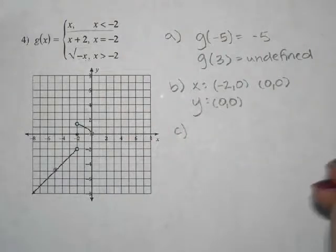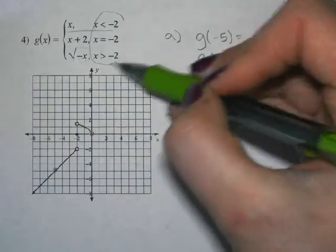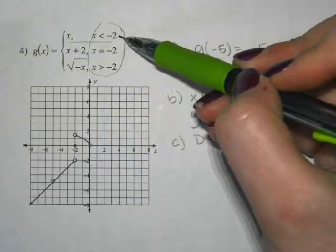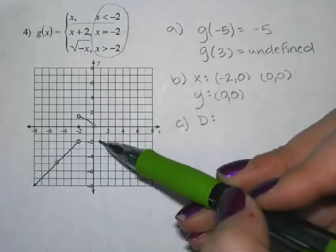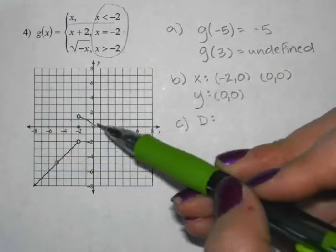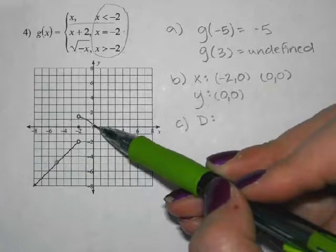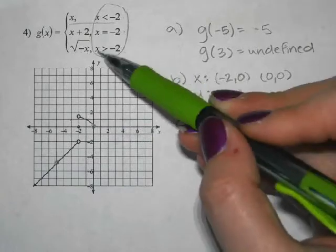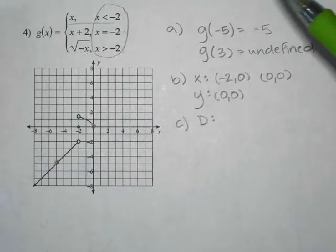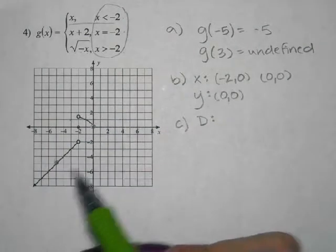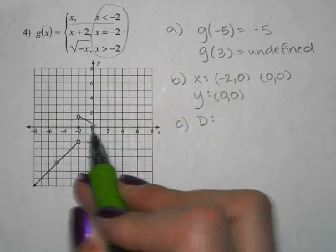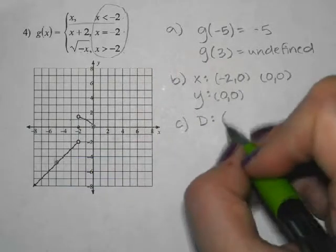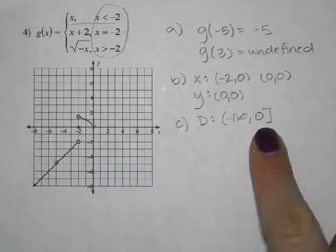For part C, we're going to find the domain and the range. It looks like we have all the numbers less than negative 2, negative 2 itself, and all the numbers greater than negative 2. But when you look at the picture, where does the graph stop? It stops at 0 because you have a square root — if you plug in a negative of a positive value, that's an issue. So the domain goes from negative infinity up to 0, and I'm going to include 0.